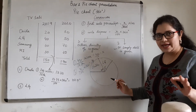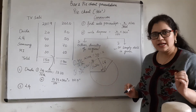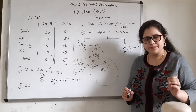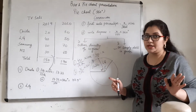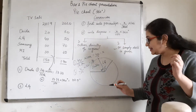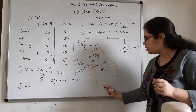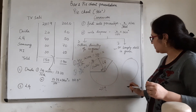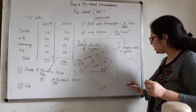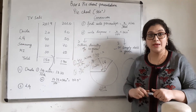What is the labeling required? First, you have to write the degrees — that is very necessary. Second labeling: the names of the brands — very necessary. Third and very important: label one chart 2019 and the other 2020. These two things are very necessary.